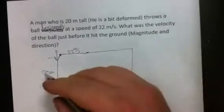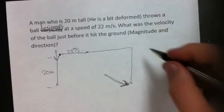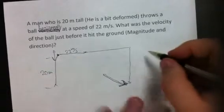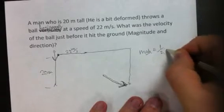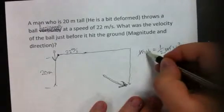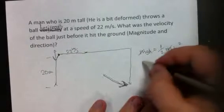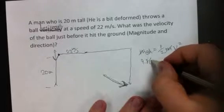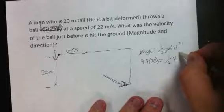To find the vertical velocity, we're given a height, and we want to find the velocity just before it hits the ground. We're going to use the formula: mass times gravity times height equals one-half mass times velocity squared. Mass cancels, so we're left with gravity times height equals one-half velocity squared. Gravity is 9.8, height is 20, and velocity is what we're looking for.